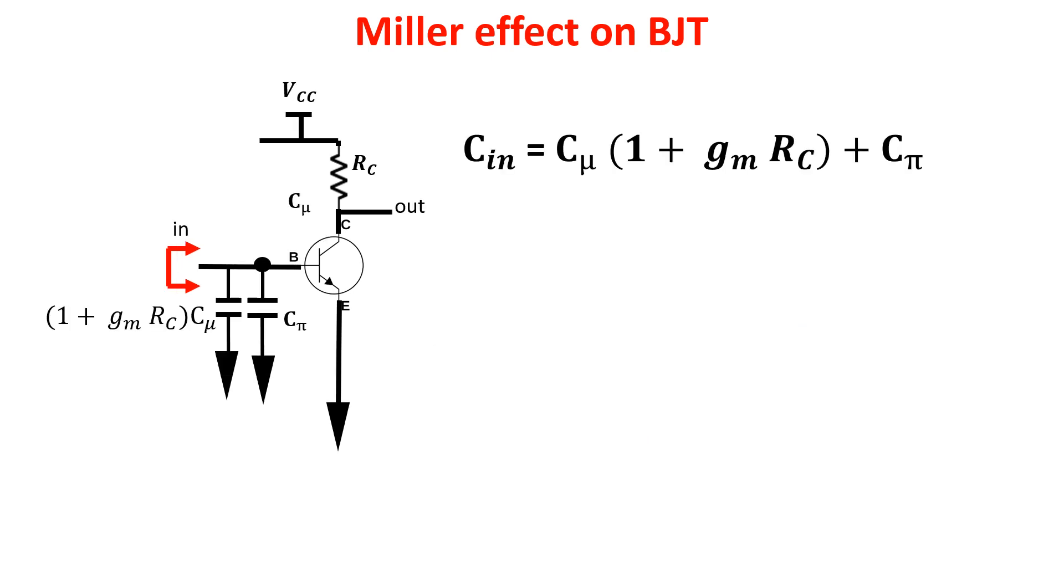The total capacitance Cin at the input of the amplifier is Cpi plus Cmu times (1 plus GM·RC). So even if Cpi is larger than Cmu, the biggest contribution is given by Cmu because it is multiplied by the gain.